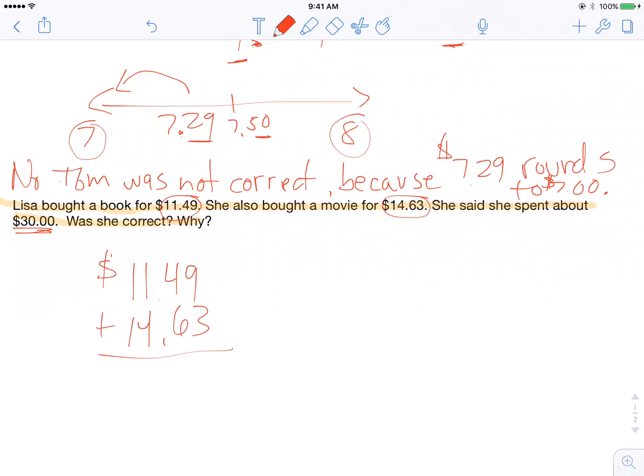So I take my two totals. I'm going to add them up. 9 and 3 is 12. 6 and 4 is 10, and 1 is 11. 4 plus 1 plus 1 is 6. Bring down my decimal. And 1 and 1 is 2. So she spent $26.12.